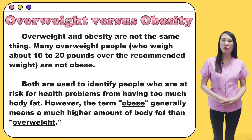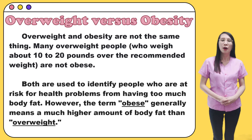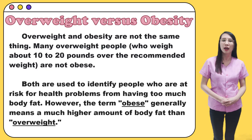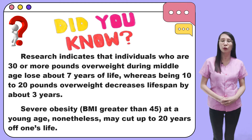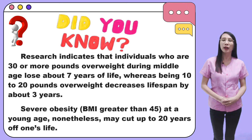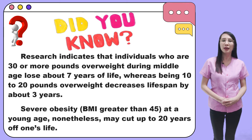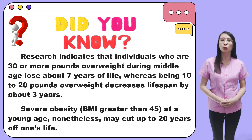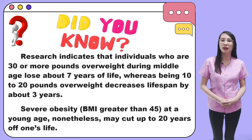So what is the difference between overweight and obesity? Overweight and obesity are not the same thing. Many overweight people, who weigh about 10 to 20 pounds over their recommended weight, are not obese. Both are used to identify people who are at risk for health problems from having too much body fat. However, the term obese generally means a much higher amount of body fat than overweight. Research indicates that individuals who are 30 or more pounds overweight during middle age lose about 7 years of life, whereas being 10 to 20 pounds overweight decreases lifespan by about 3 years. Severe obesity, or BMI greater than 45 at a young age, may cut up to 20 years off one's life. This is why it is very important that we keep a well-balanced lifestyle combined with a healthy eating habit.